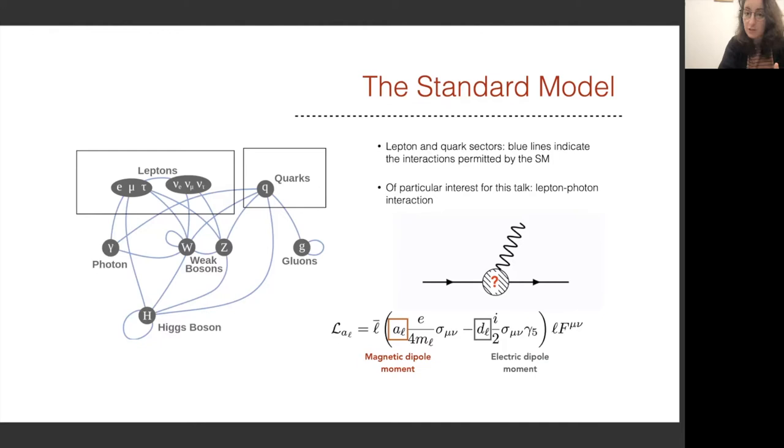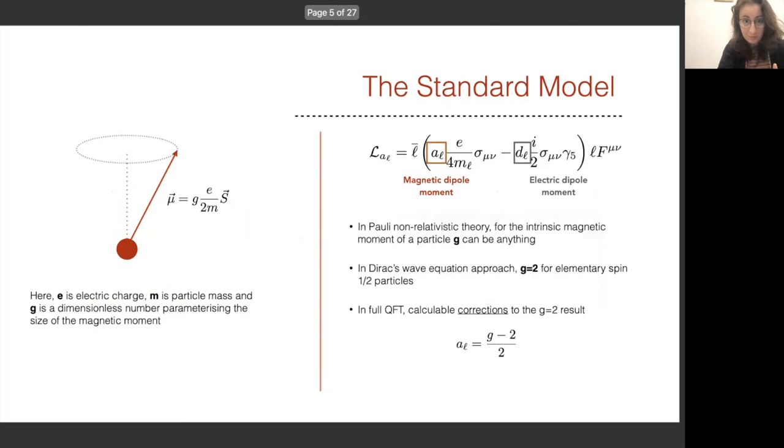Within this blob here could be either standard model or beyond the standard model particles. The effective interaction can be parameterized by the Lagrangian shown here, where the first term is the magnetic dipole moment, and the second is the electric dipole moment. Here F_μν is the standard electromagnetic field tensor. Now what is the magnetic dipole moment? One can think of it as the way that a spin-half particle interacts with the magnetic field, how the spin couples to the field.